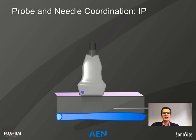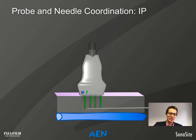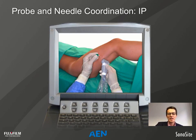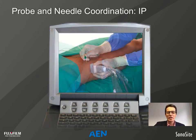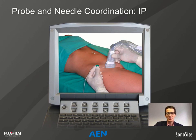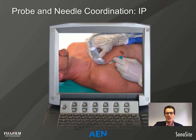For in-plane procedures, whenever possible we try to have a parallel needle path in relation to the footprint, which creates good reflections of sound waves back to the probe — with the bevel directed towards the probe as well. This is possible in distal sciatic nerve blocks or TAP blocks. However, anatomical situations sometimes make this difficult — for example, in subclavian vascular access there is no option for a parallel needle path in relation to the footprint.